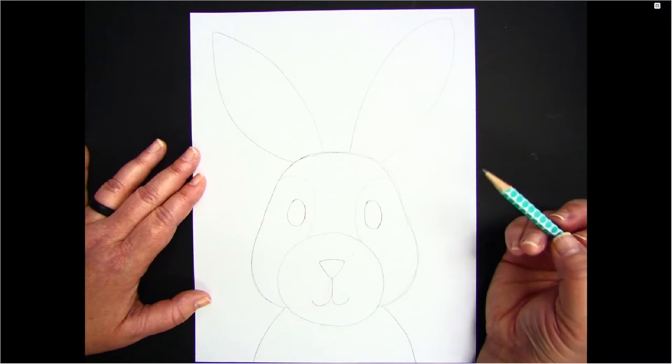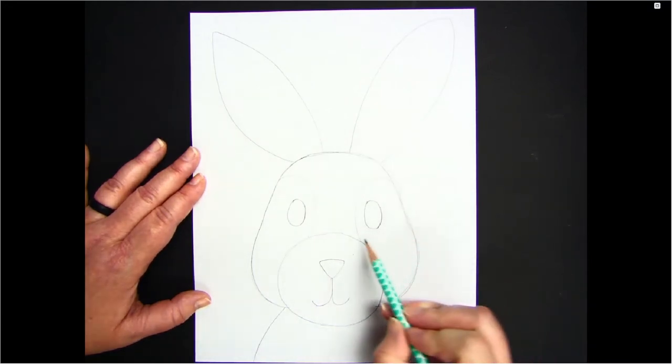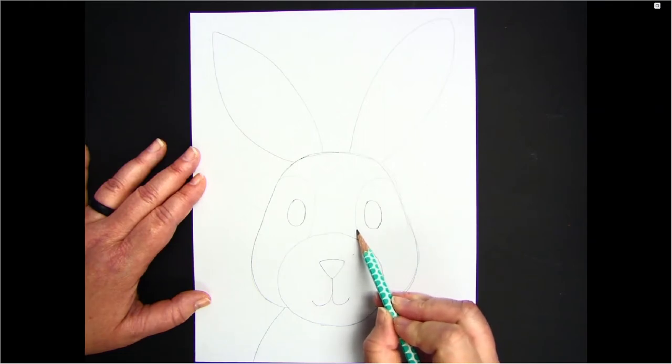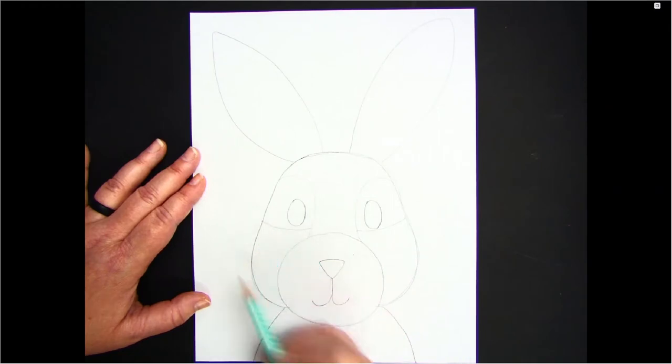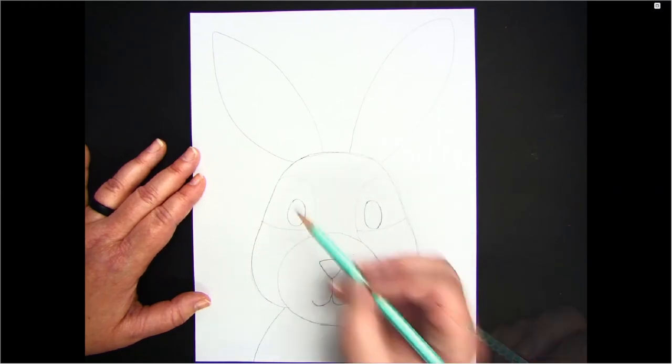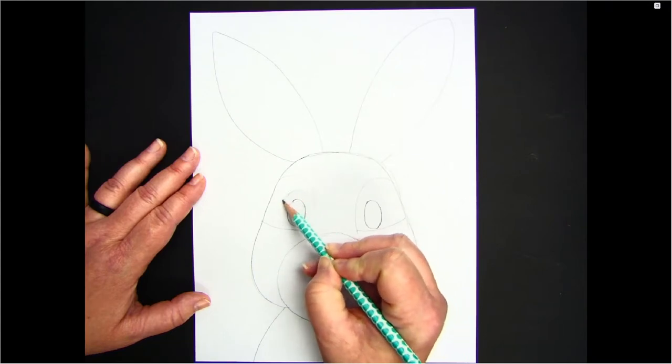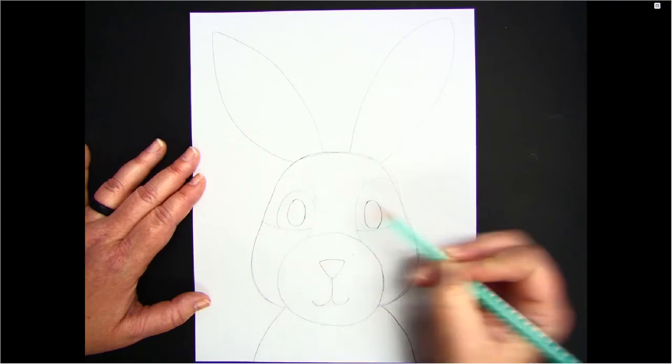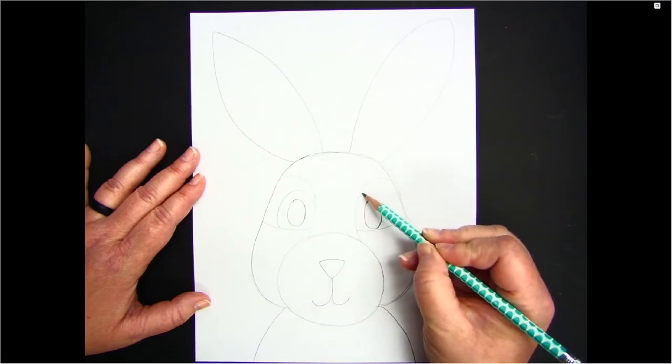Keeping my lines very light so they can easily be erased, I'm going to go up under his eye on each side and draw a curve out to the side of his face. I'm also going to draw a curve around his eye this way, mimicking the shape of his eye.